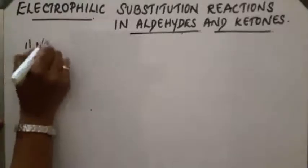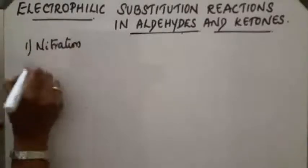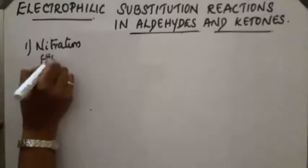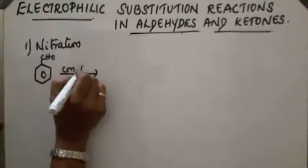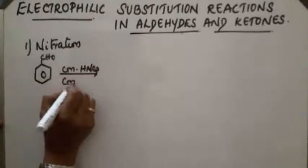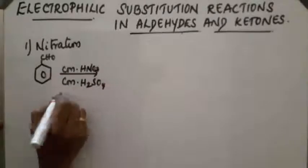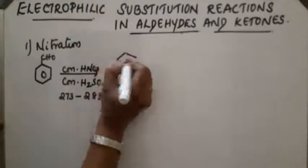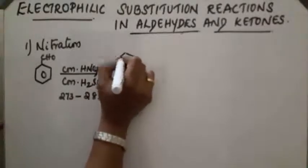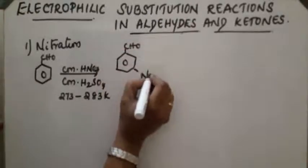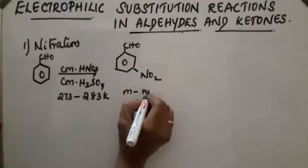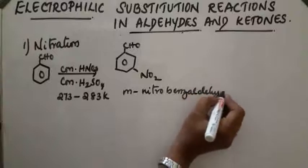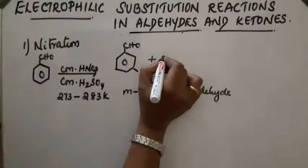Nitration reaction in benzaldehyde: benzaldehyde (CHO) reacts with concentrated nitric acid and concentrated sulfuric acid at a temperature of 273 to 283 Kelvin. The product obtained is meta-nitrobenzaldehyde.